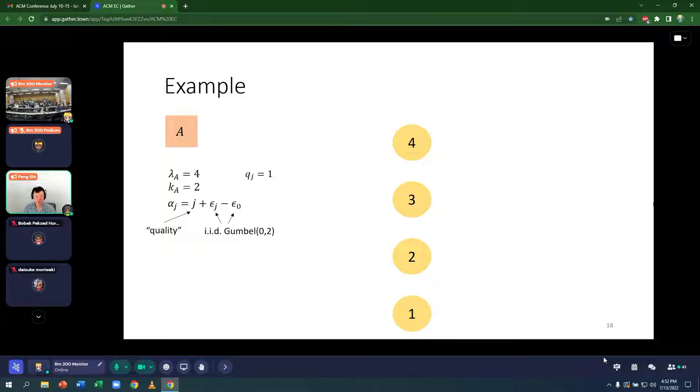The capacity of each provider is one in this example. And the surplus between each customer and matching with each provider is based on the quality of the provider plus certain idiosyncratic terms. For simplicity, I make the quality equal to the index of the provider in this numerical example. And epsilon_j is the customer's idiosyncratic taste with matching with provider J. And epsilon_0, you can think of it as the customer's outside option, maybe go off the platform match with someone else.